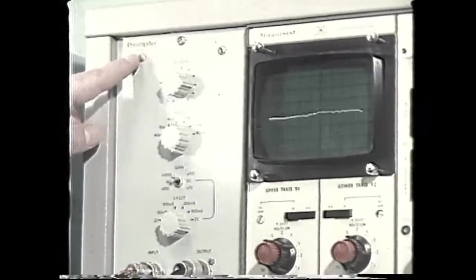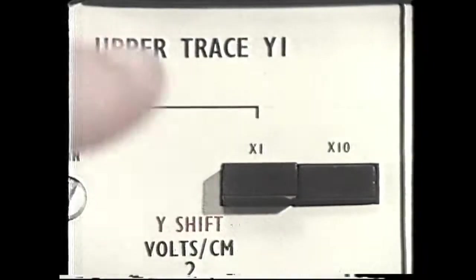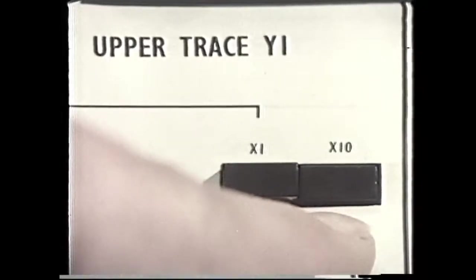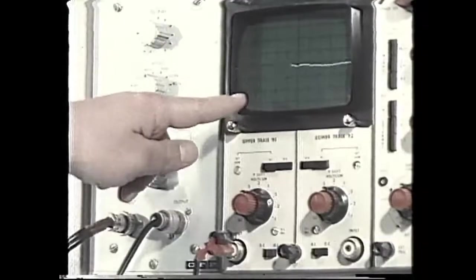A preamplifier multiplies the current 1,000 times and its output is amplified another ten times and fed to this oscilloscope screen.